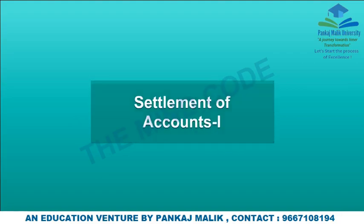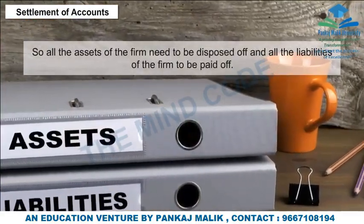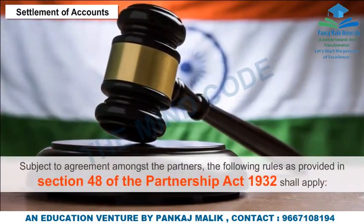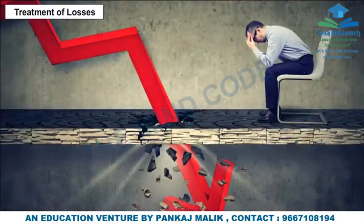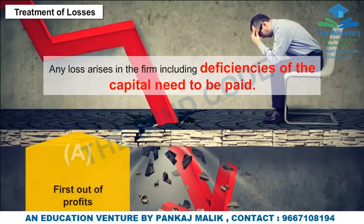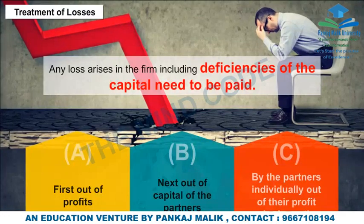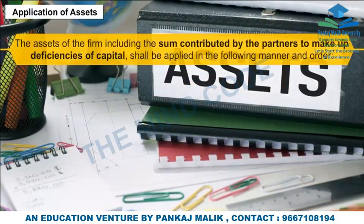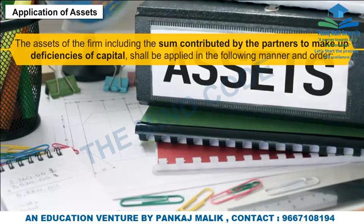Settlement of Accounts: In case of dissolution of the firm, the firm needs to close its business, so all assets need to be disposed of and all liabilities paid off, subject to agreement amongst the partners. The following rules as provided in Section 48 of the Partnership Act 1932 apply. Treatment of Losses: Any loss arising in the firm, including deficiencies of capital, needs to be paid — first out of profits, next out of capital of the partners, and then by the partners individually out of their profit-sharing ratio. Application of Assets: The assets of the firm, including sums contributed by partners to make up deficiencies of capital, shall be applied in a specified order.